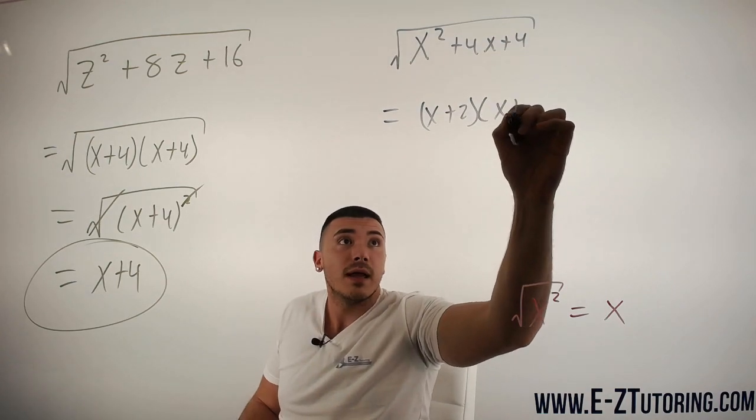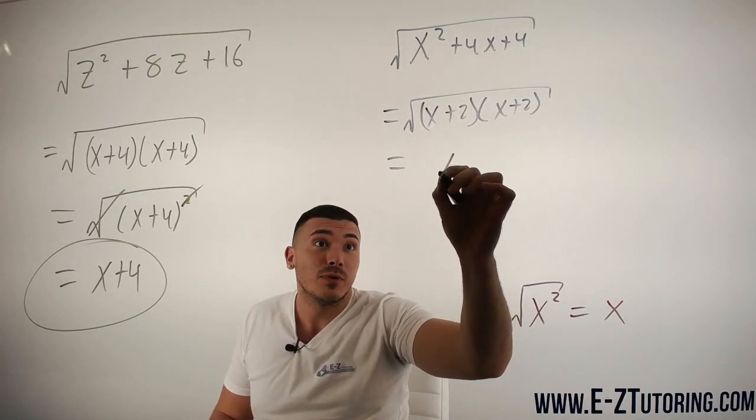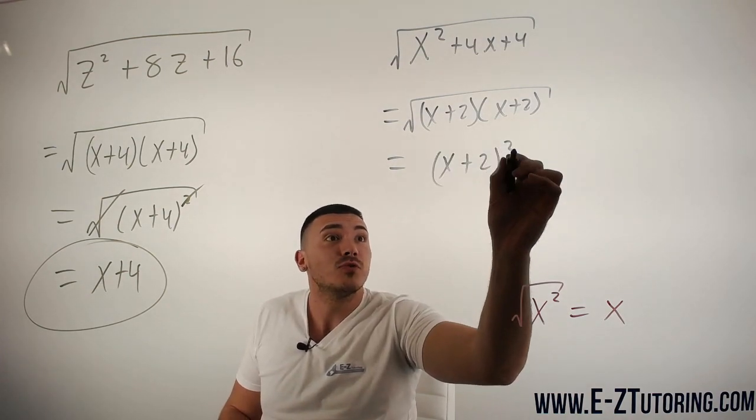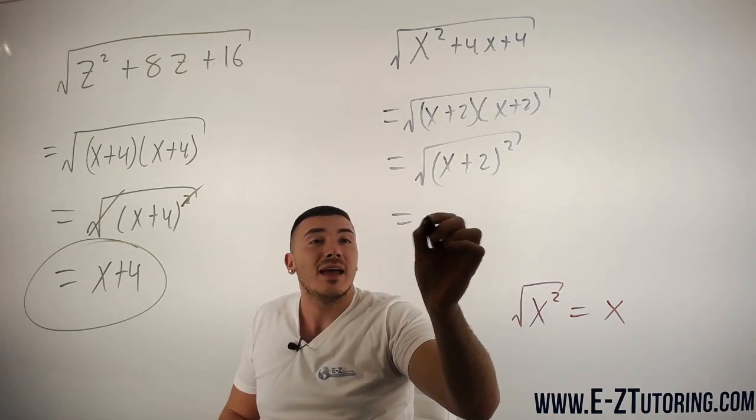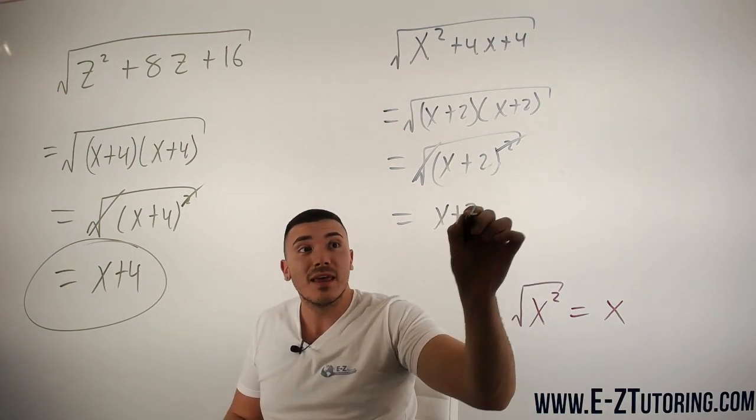x plus 2, x plus 2, square root. We can go ahead and rewrite this as x plus 2 squared and a square root and a square cancel each other out. So we're left with x plus 2.